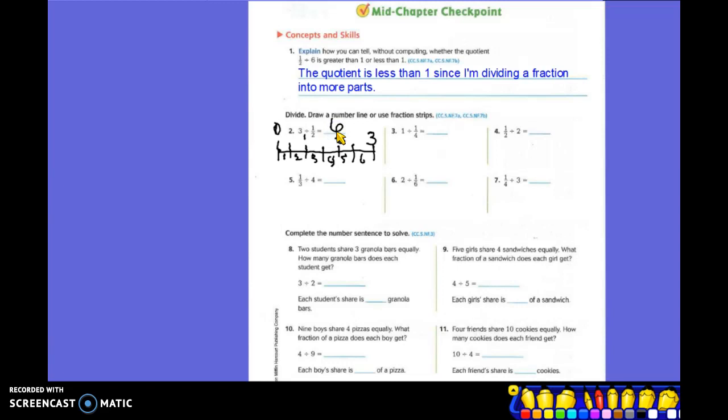Number 5 is having us do a fraction. So if I have a number line, and this is 0, and this is 1, and I'm dividing it into 3rds, and then I'm going to divide my 3rds into 4 parts. So then each part is what? A 12th. I would have 4 there, 4 here, and 4 here. So each part would be 1/12th.